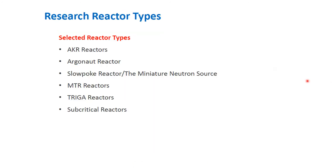Let's discuss some selected research reactor types. These include the AKR reactor, Argonaut reactor, Slowpoke reactor or miniature neutron source, MTR reactor, TRIGA reactor, and subcritical reactors.